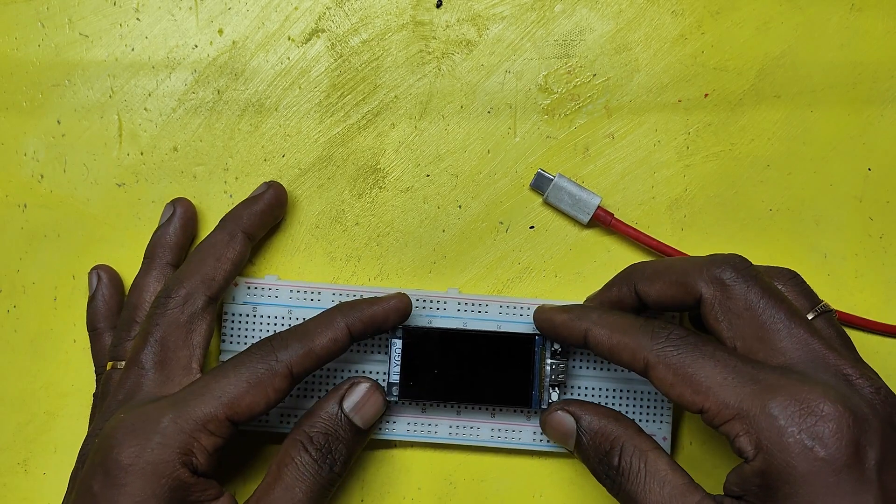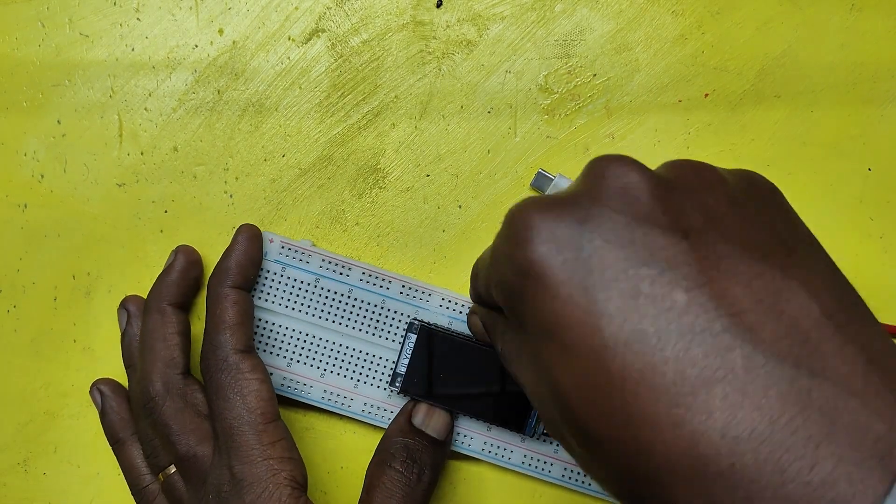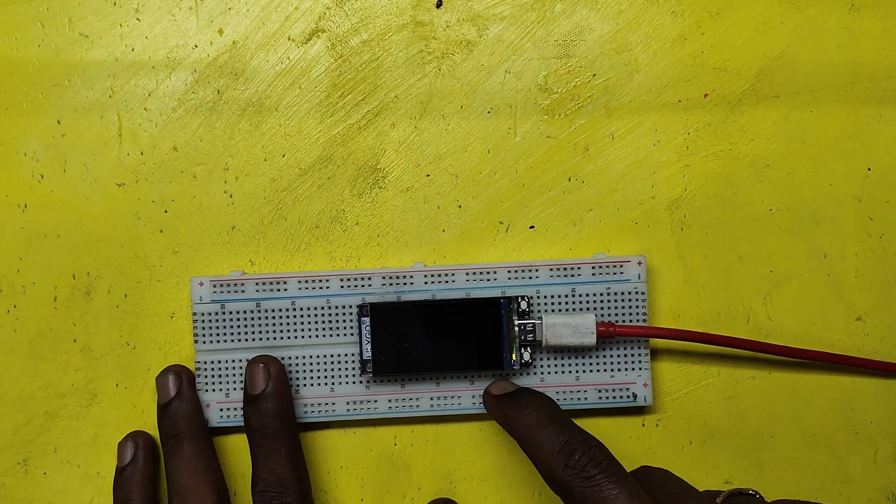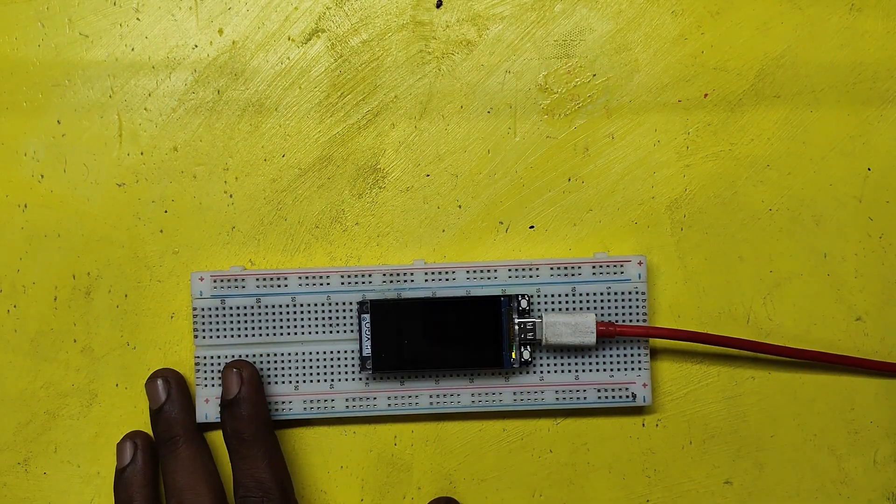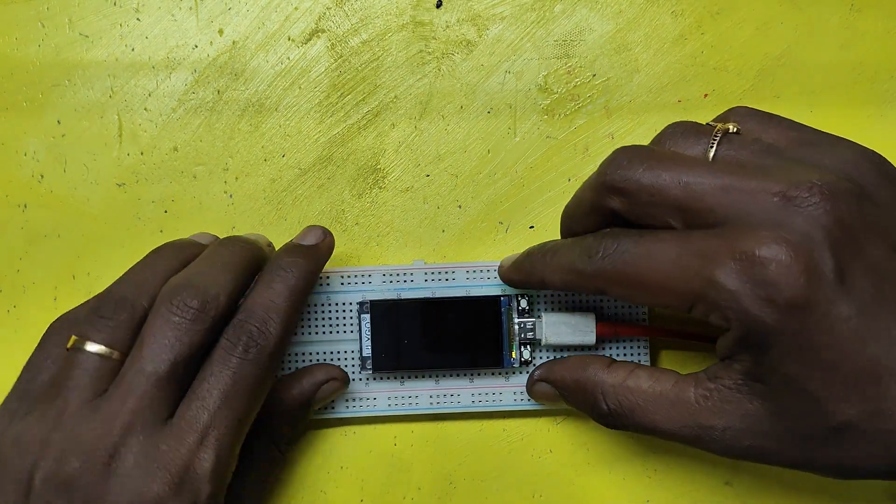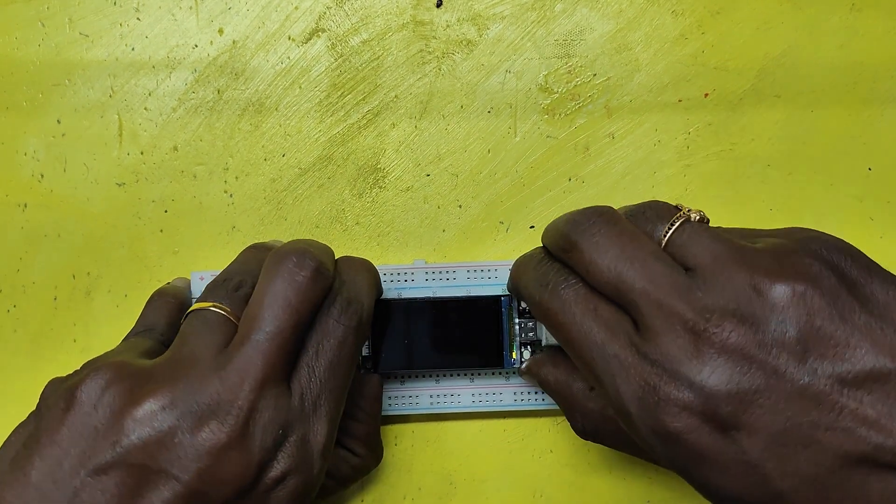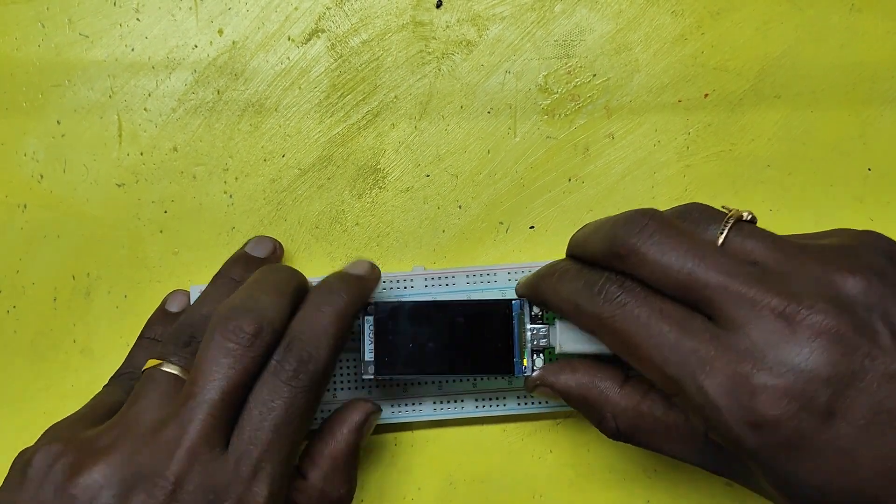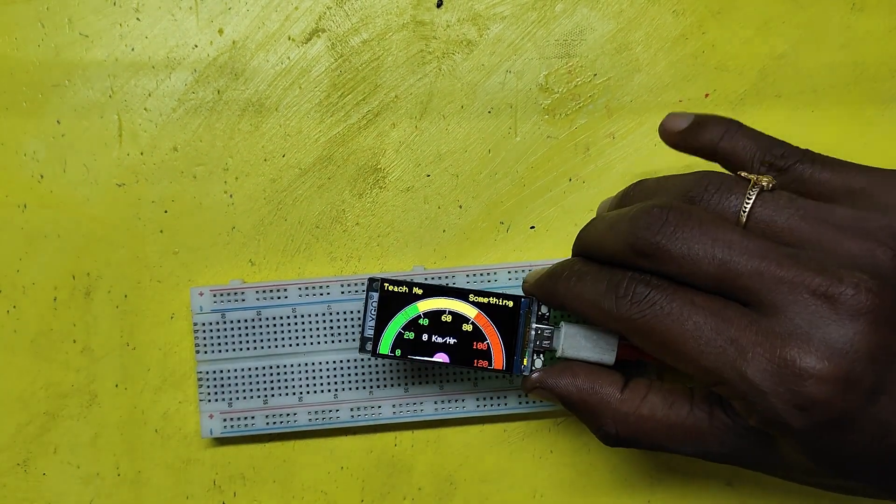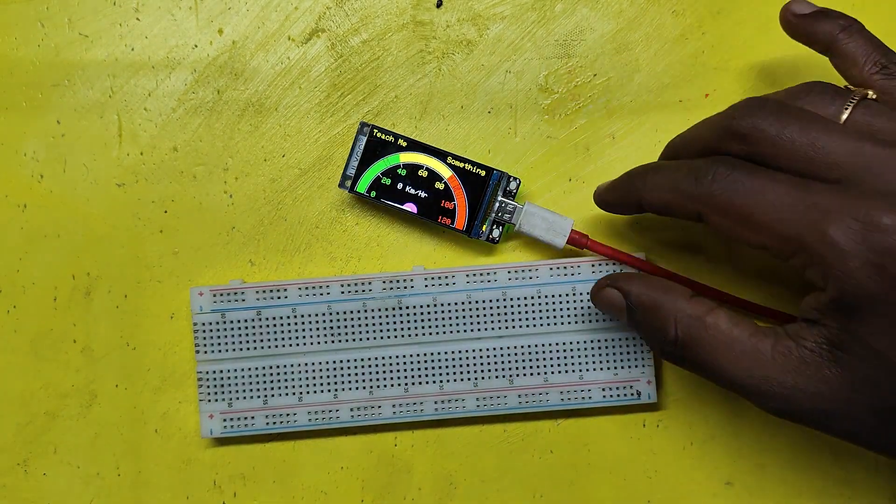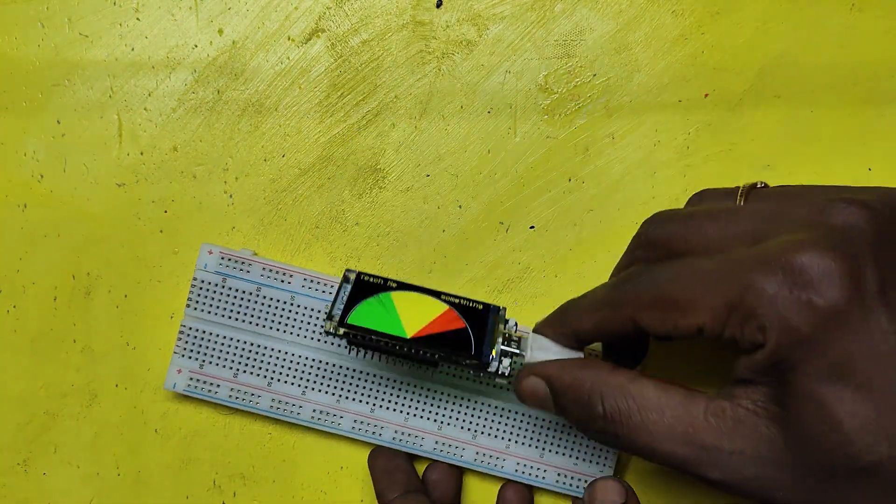So I decided to use breadboard and connect the wires. After inserting into breadboard, I pressed reset button but same black screen. So I removed from breadboard and pressed reset button again to test my LCD. It is working again. I was confused.